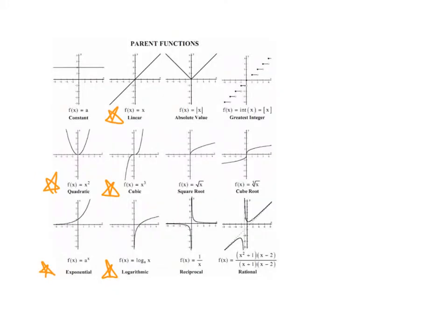It's also handy to know some parent graphs. If the shape of your data points is linear, it makes a line. If it's a U shape, that's quadratic. If it's a bit of a snake, that's cubic. If it starts out flat and then increases rapidly, that's exponential. And if it increases rapidly and then starts to level out, that's logarithmic. These are the five you really need to know for the following questions.